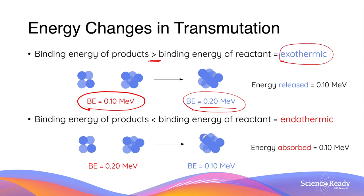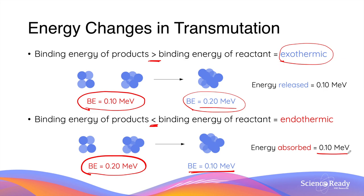Let's look at what happens when the binding energy of the product is less than the binding energies of the reactants. In this example, 0.2 MeV of energy needs to be absorbed to break apart the nucleons in these two nuclei, and when the product nucleus is formed, its binding energy of 0.1 MeV will be released. This time, we have more energy going into the reaction than what is released. This results in a net energy of 0.1 MeV being absorbed — which is why the reaction is described as endothermic.